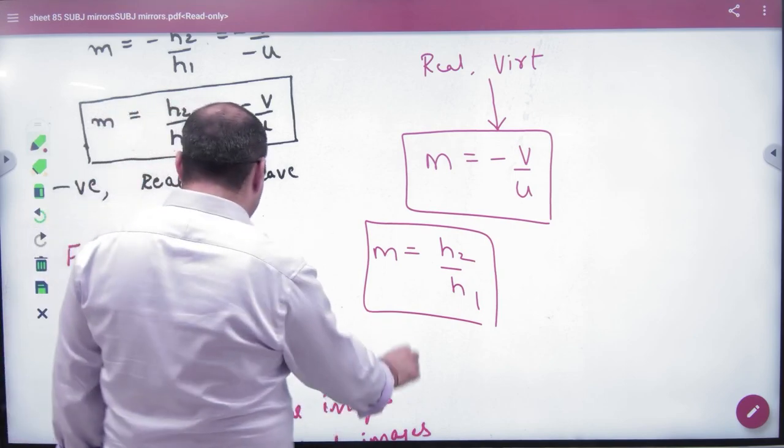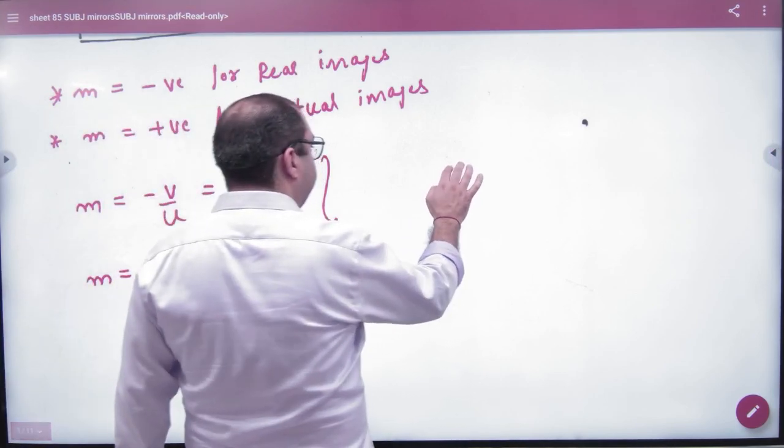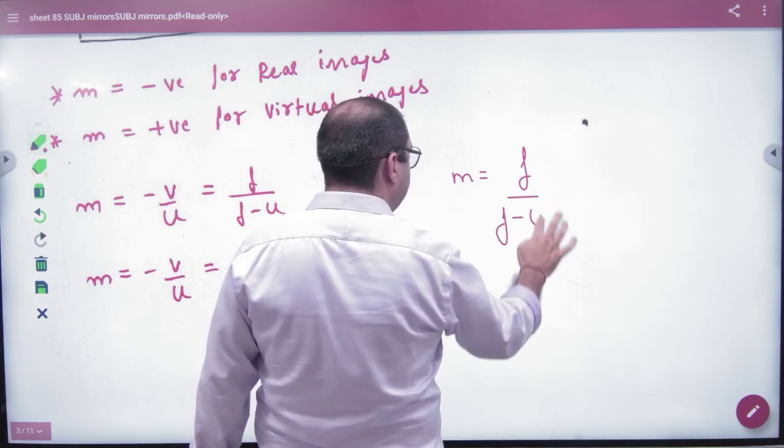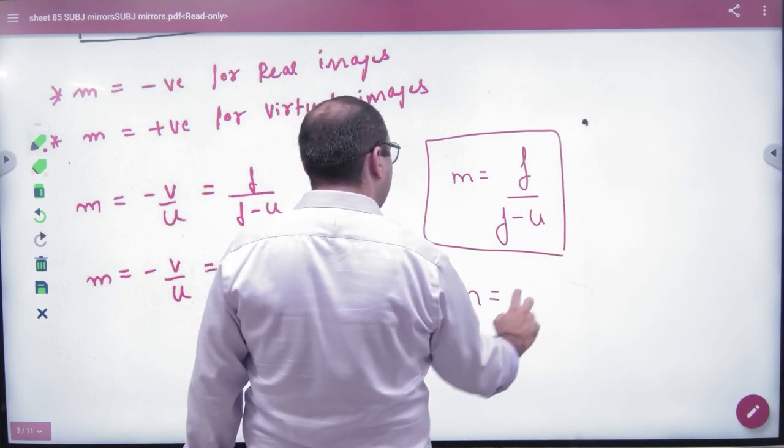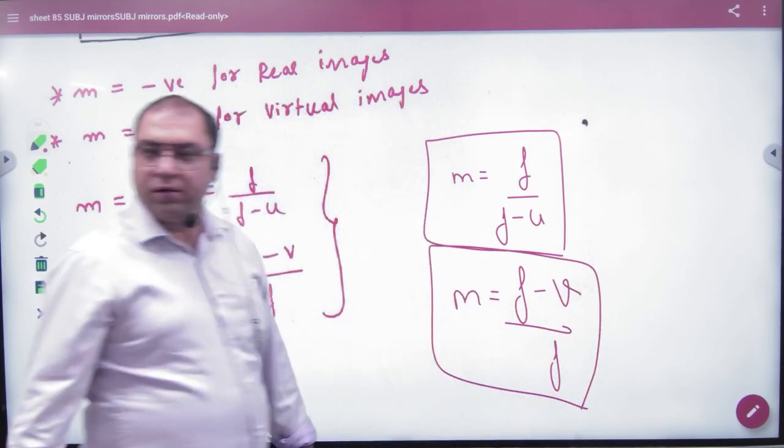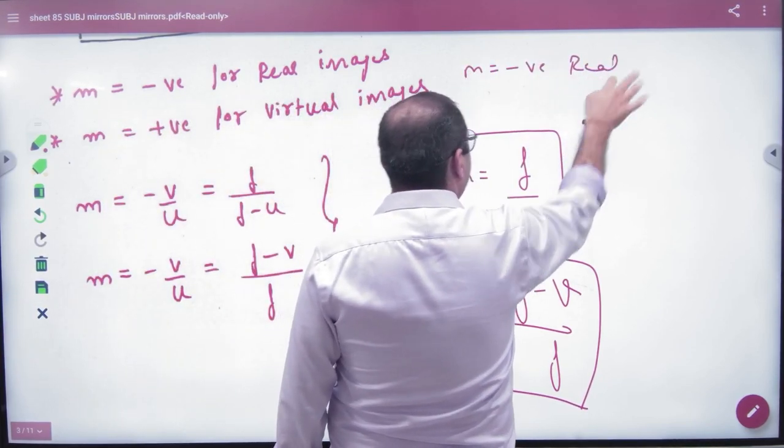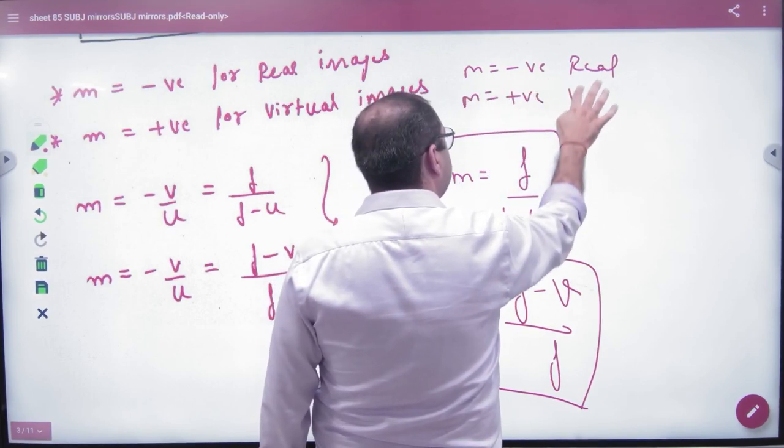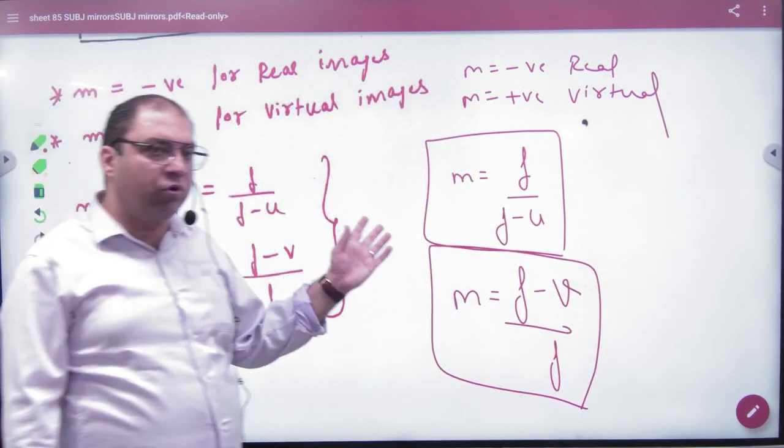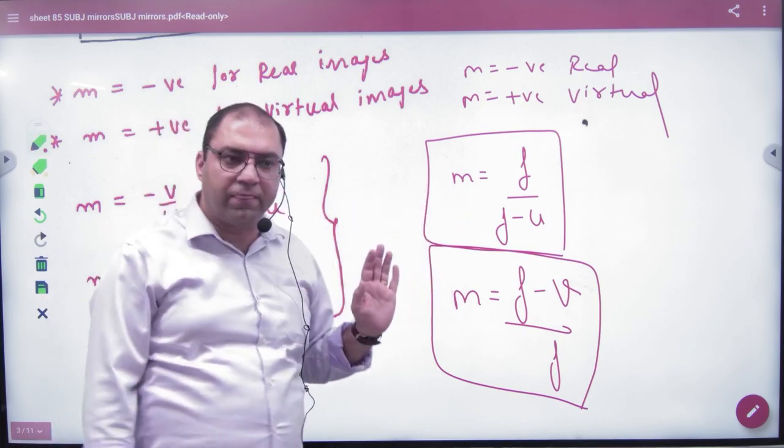The third formula. Magnification formula, the third - note this. Magnification: M equals F divided by F minus U. And magnification equals F minus V divided by F. Magnification, okay? And let's write: magnification negative put if the case is real, and magnification positive put if the case is virtual. So if you have a question where you're given U and magnification, then this is the formula. And if V is given, then this is the formula. So what point is clear here?